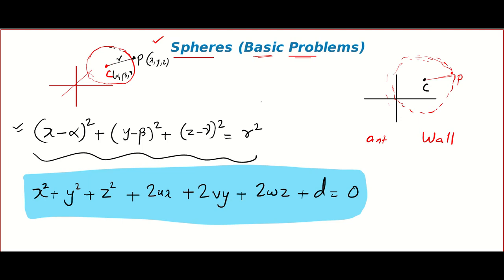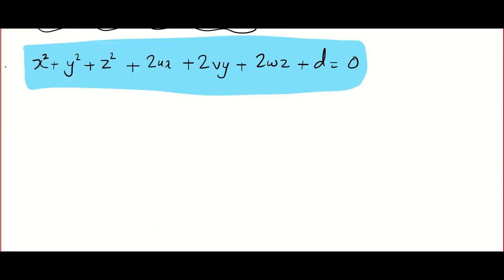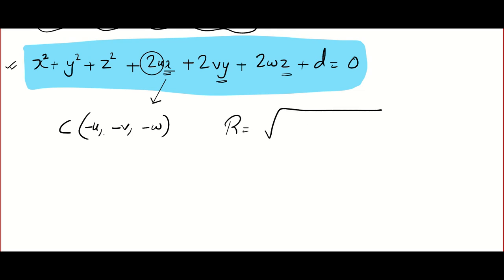Suppose you are given an equation of a sphere and you want the center and radius. It's very easy: look at the coefficient of x, the coefficient of y, and the coefficient of z, divide the coefficients by negative 2. So the center is (−u, −v, −w) in general, and the radius is given by √(u² + v² + w² − d).